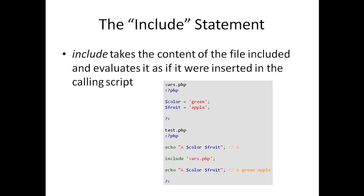The example here is from php.net and it's called vars.php. All vars.php has is color equals green and fruit equals apple. Then there's another script called test.php. In test.php you have two examples where you're echoing the variable color and the variable fruit. The first one just results in echoing nothing. Then we include vars.php, and when you re-echo the exact same line, you get a green apple. The variables are as if we set them in test.php — it's as if we took color equals green and fruit equals apple and put them inside test.php right where the include statement is.